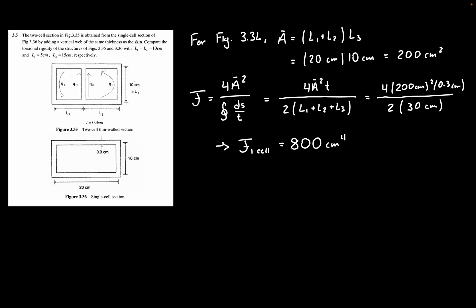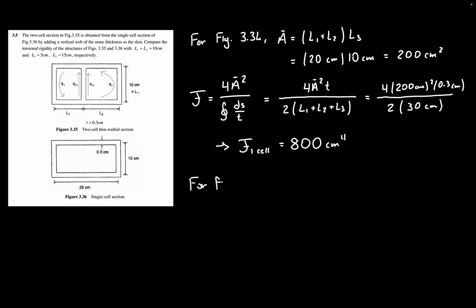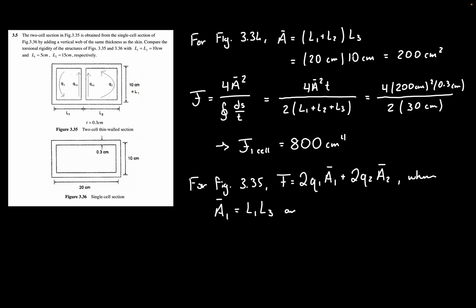Now we formulate an equation for J for the upper figure, figure 3.35. The torque is the summation of 2 times the area times the shear flow for each section: 2 times Q1 times A1 plus 2 times Q2 times A2 equals torque. Here, A1-bar equals L1 times L3, and A2-bar equals L2 times L3.